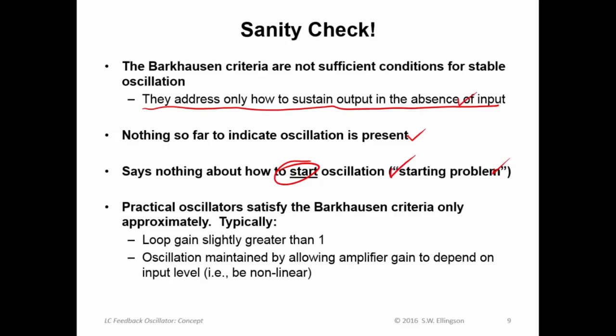And here it is. Practical oscillators satisfy the Barkhausen criteria only approximately. Typically what we do is we let the loop gain be slightly greater than one and we maintain the oscillation once we achieve it by allowing the amplifier gain to depend on the input level. That is we allow the amplifier to be slightly non-linear. If I do this then I can more easily overcome this thing we're calling the starting problem and get this whole thing started.